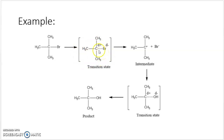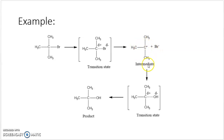This transition state is very unstable. After some time, the carbon-bromine bond breaks completely and there is formation of the tertiary methyl carbocation and bromide ion. This tertiary methyl carbocation is called the intermediate, and it is relatively more stable compared to the transition state.